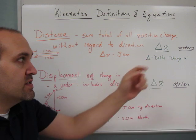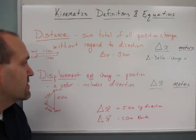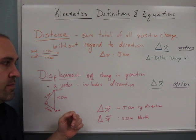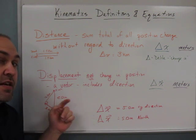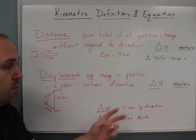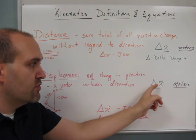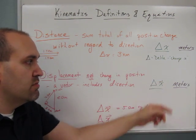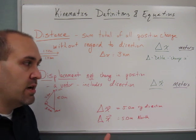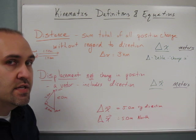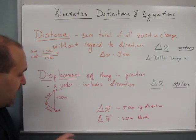Displacement is the net change in position, but that's a vector—it includes direction. And so when we write that with the symbol, we write Delta, which means change in, and X for position, but we put the vector symbol above the X to indicate that we're talking about displacement instead of distance, and it's again measured in meters.